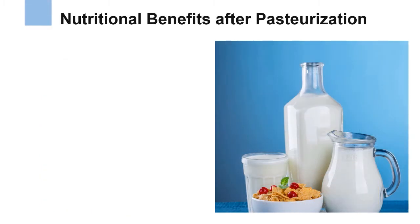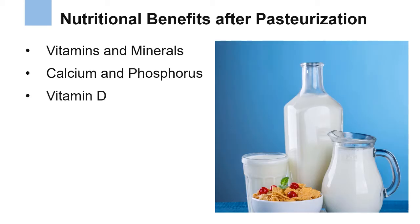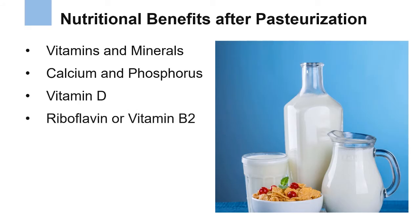It is important to note that pasteurization does not significantly alter the nutritional qualities of milk. Studies have shown that the important nutrients in milk are not affected by heat. When it comes to vitamins and minerals, pasteurized milk is an excellent source of calcium, riboflavin, vitamin A, and phosphorus, as well as a good source of thiamine and vitamin B12. Important minerals like calcium and phosphorus are both absorbed from pasteurized milk just as well as from raw milk. Pasteurized milk is also fortified with vitamin D, which is essential for healthy bones, unlike raw milk which only contains a small amount of this important vitamin. One vitamin whose levels are affected by pasteurization is riboflavin or vitamin B2. While the quantity is decreased by pasteurization, pasteurized milk remains an important dietary source of this vitamin.